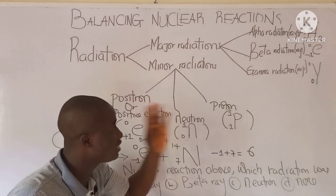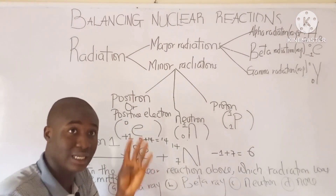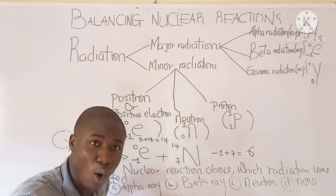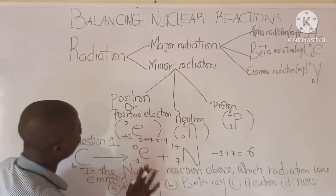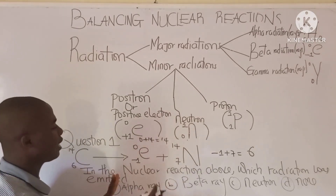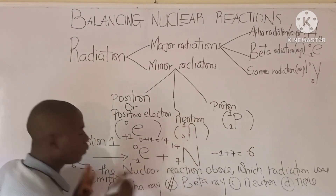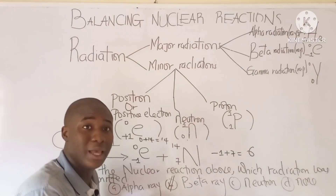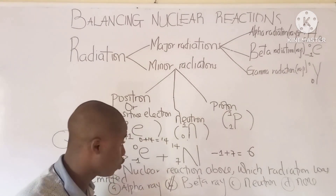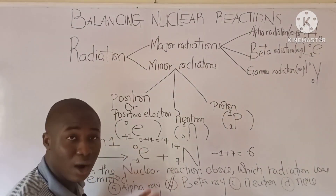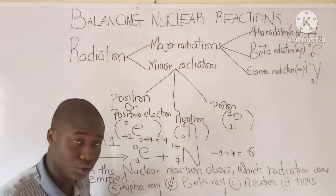All of these symbols must be noted for their respective radiations, whether major or minor. Looking at this question, the answer goes to option B, because option B bears the beta radiation. You can see how questions like this have been tackled without stress.